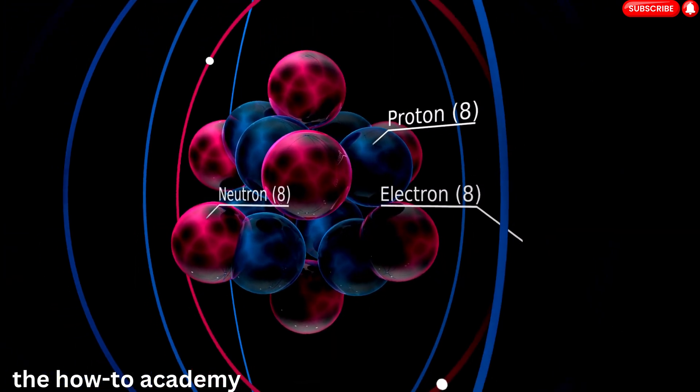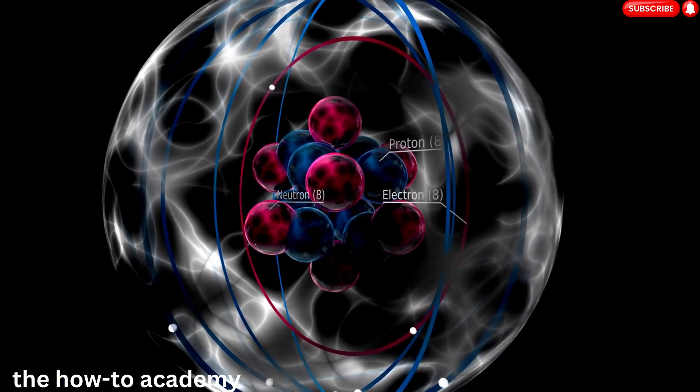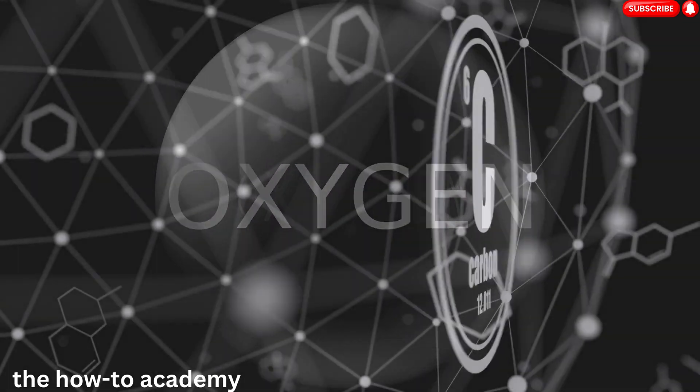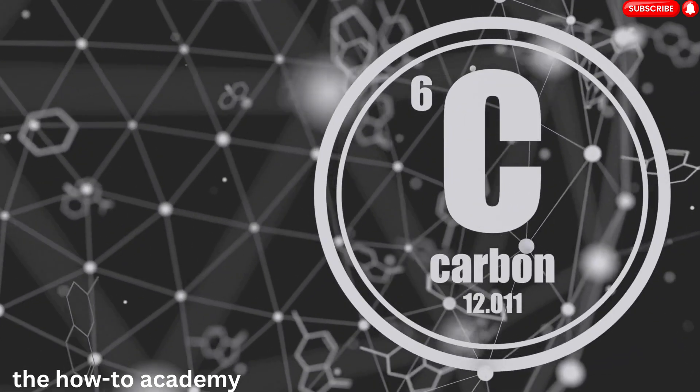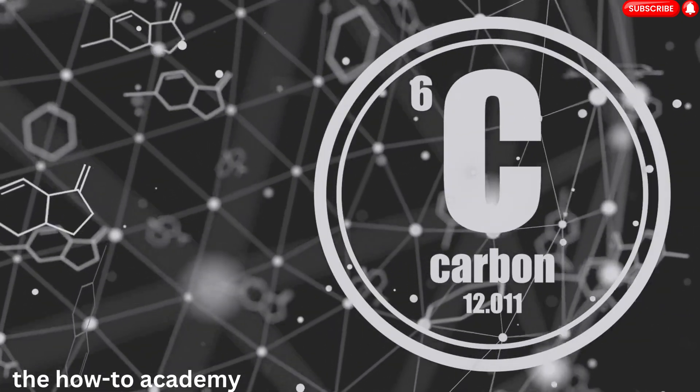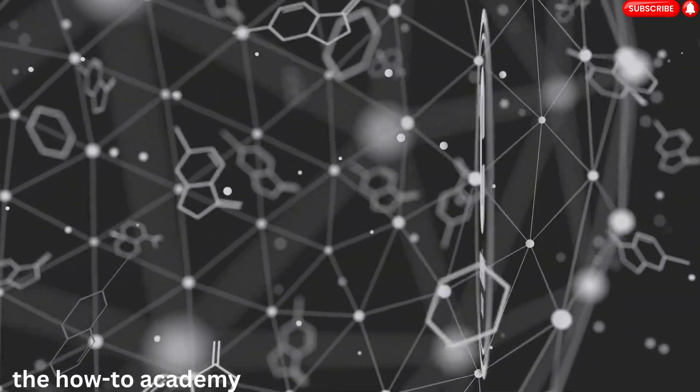The number of electrons in an atom is crucial as it determines the atom's chemical properties. For example, carbon, the building block of life, has six electrons, whereas oxygen, the gas we need to breathe, has eight.